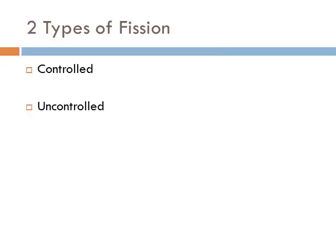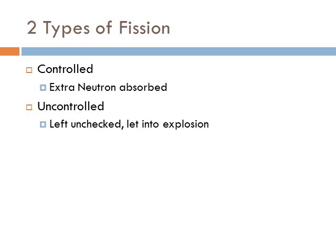We use two terms to describe the fission reaction process: controlled and uncontrolled. Controlled fission is where you absorb extra neutrons — because for each split of a uranium-235 or plutonium-239 atom, you get 3 extra neutrons. To keep only one additional reaction, you need to absorb some of those neutrons. Uncontrolled means you leave it unchecked, so for every atom split you get more, and that's when you get an explosion.